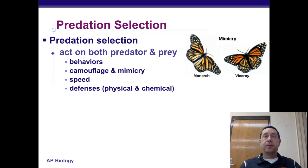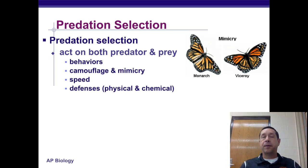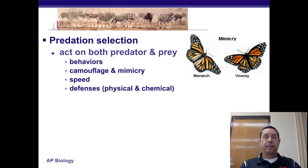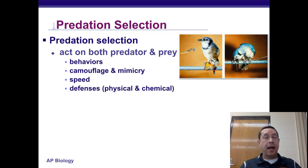Predation selection works with both predators and their prey, creating certain behaviors. It can cause or modify camouflage or mimicry, affects speed, and drives physical and chemical defenses. One example: some butterflies taste really bad.